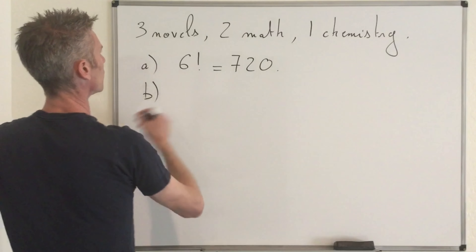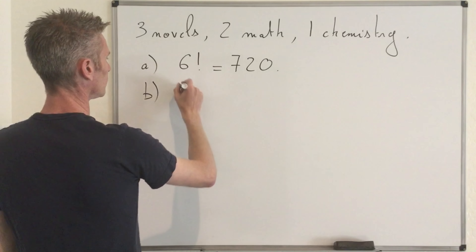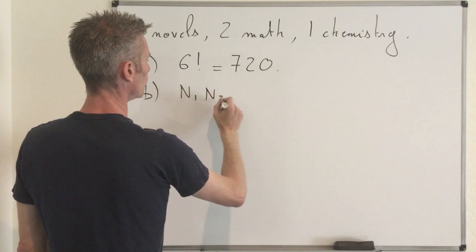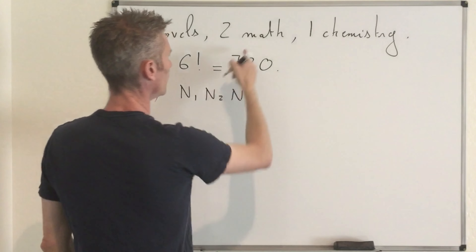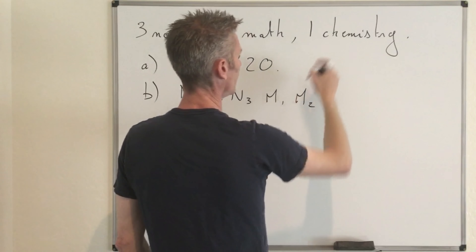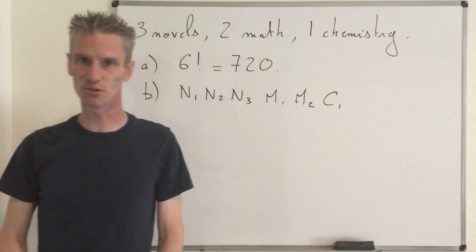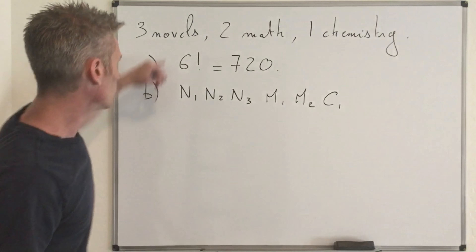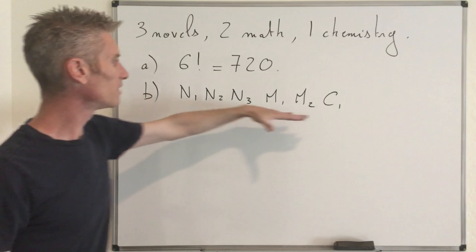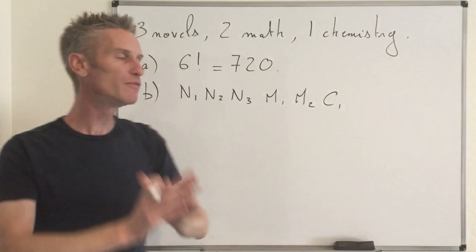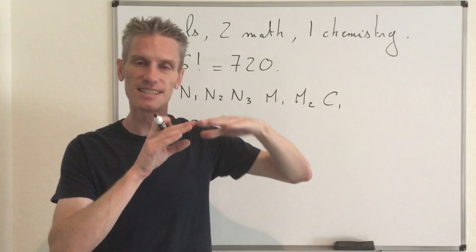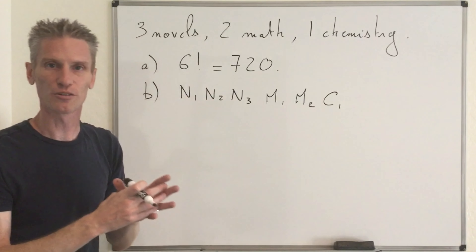In this case, let's call those novels N1, N2, N3. Then you have Math 1, Math 2, and Chemistry 1. The restriction is that — to illustrate this — if I draw a line with six possible positions, I'm already stuck because I have three groups of different sizes. For the first position, you may argue you have six possibilities, but if you choose a novel first, you have two possibilities for the second place. If you choose a math book first, you have only one possibility for the second place.